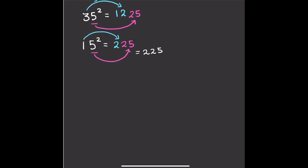Let's go with 25 squared now. We're going to do the same thing. So with 25 squared, we're going to do 5 times 5, which is going to be 25. And then we're going to times 2 by its next highest number, which is obviously going to be 3. So it's going to be 2 times 3, which is going to be 6. So the answer is going to be 625. I hope you guys got that one right.